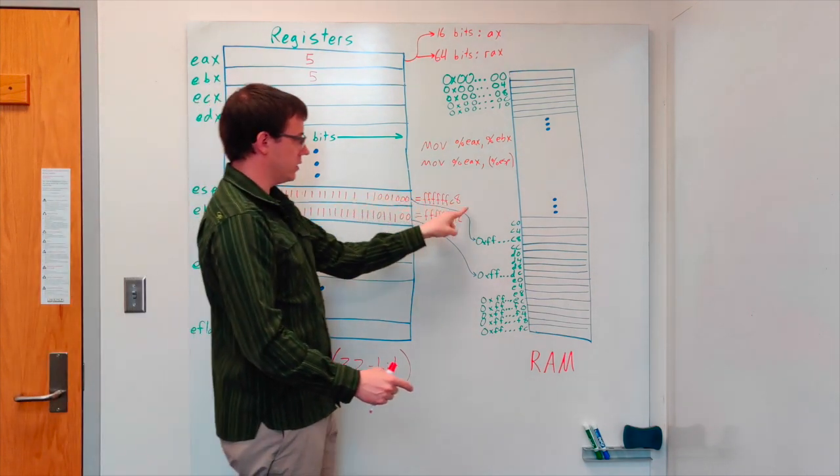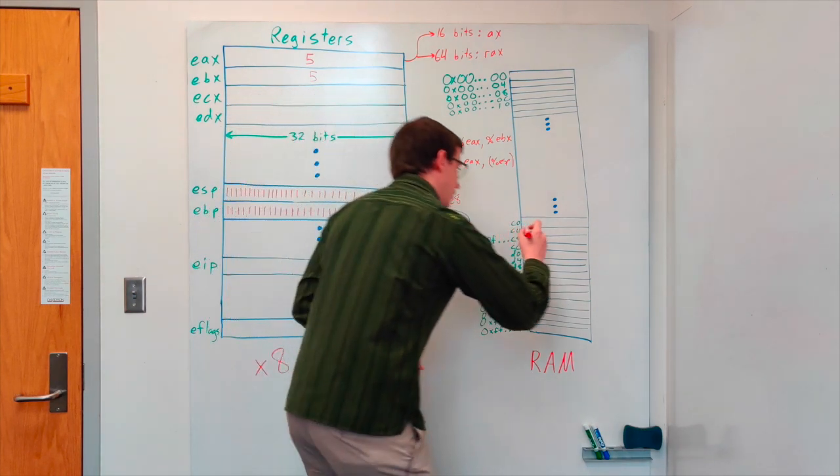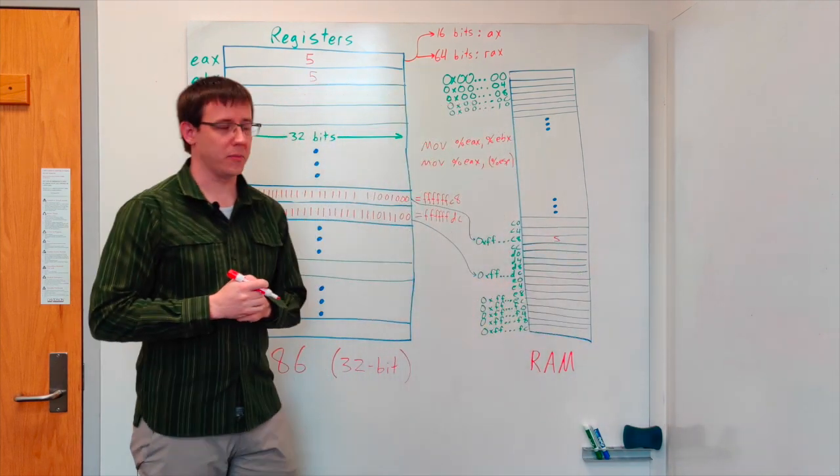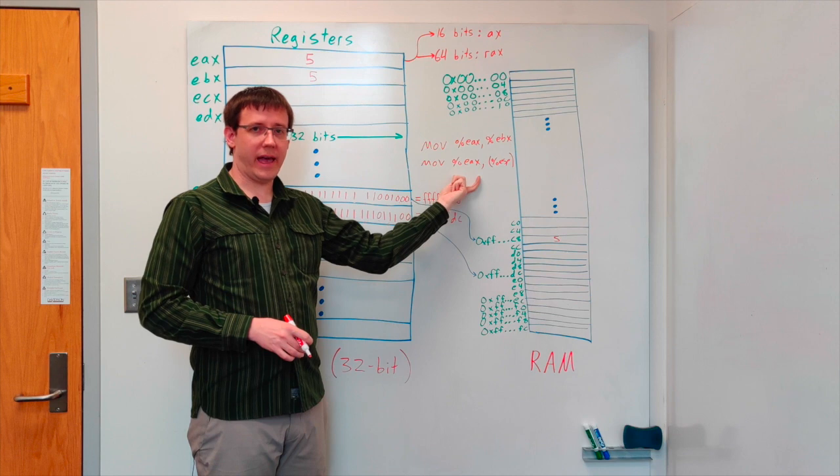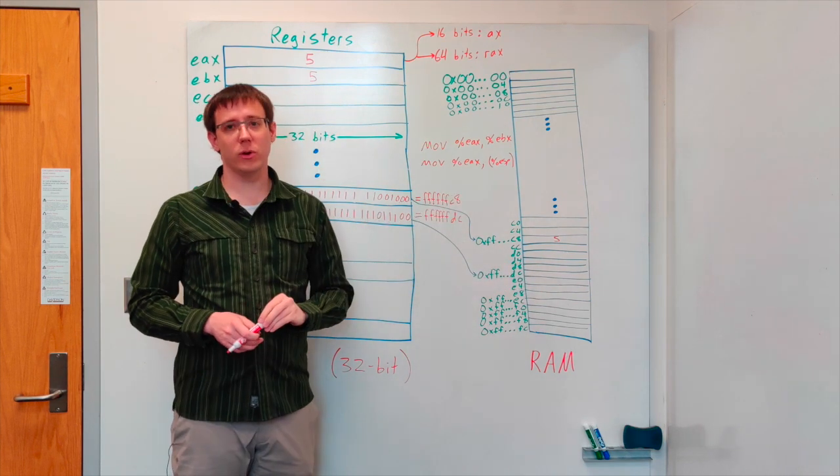So the stack pointer register is storing the address FFFC8, and so we'll put the value 5 in this location in memory. We can also use a memory address as the source to load data from memory into a register.